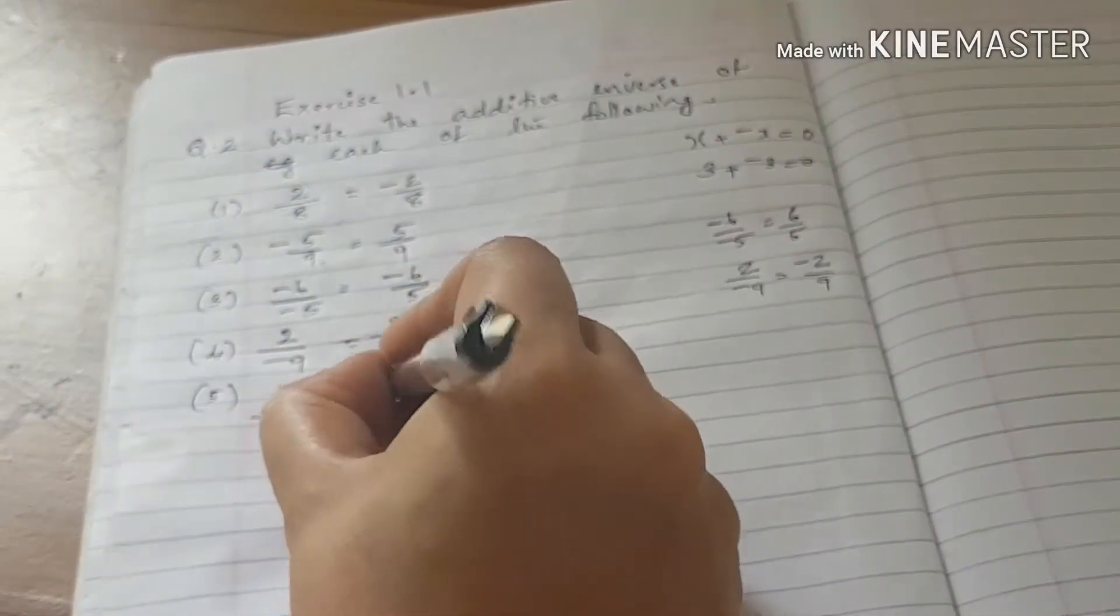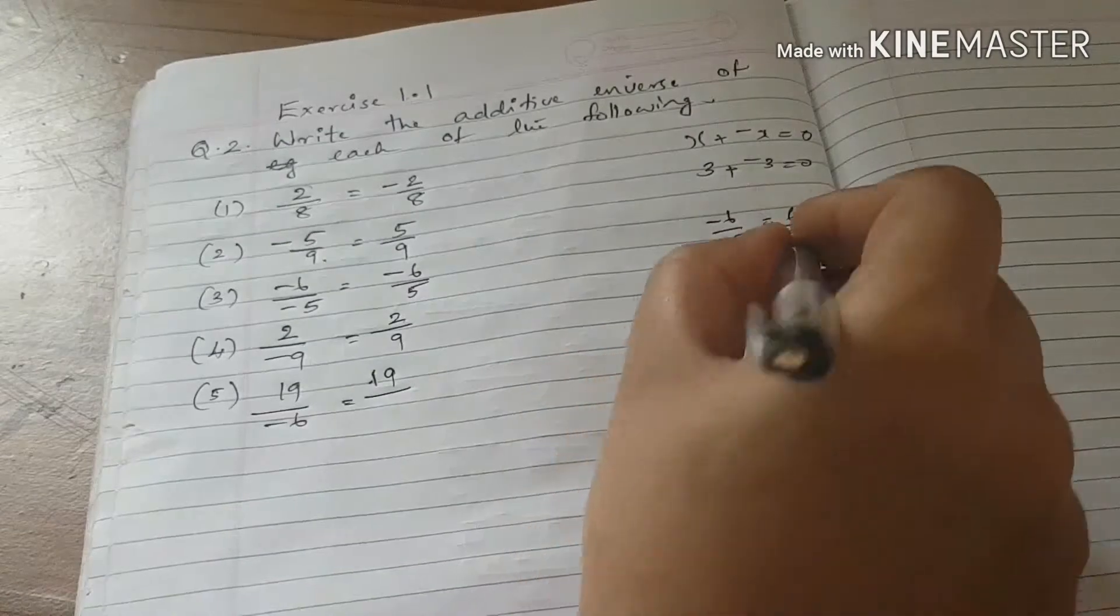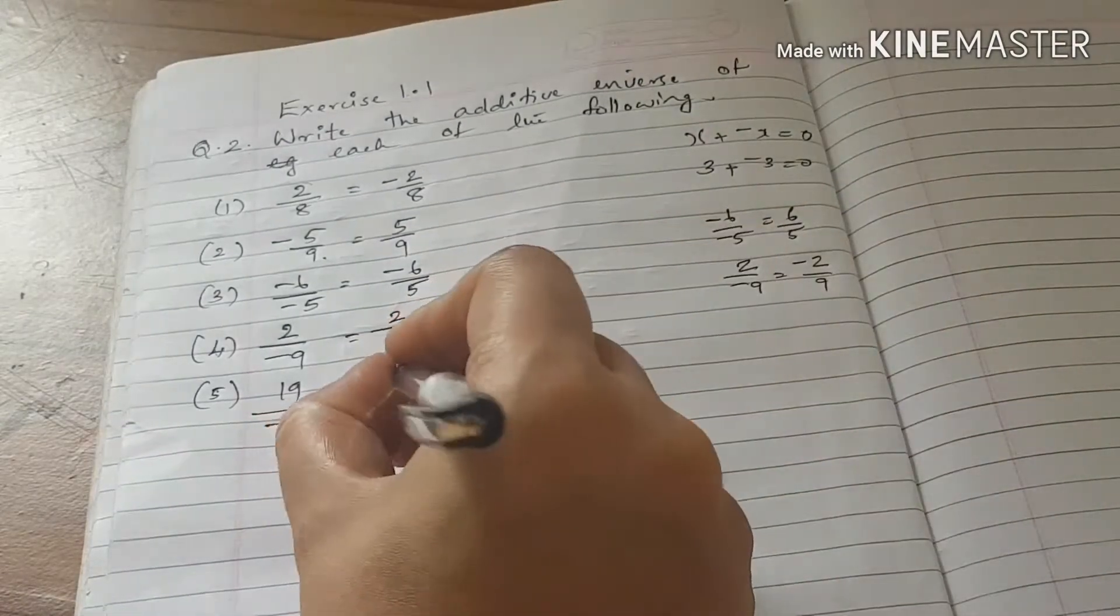For 19 divided by 6, the additive inverse is minus 19 by 6.